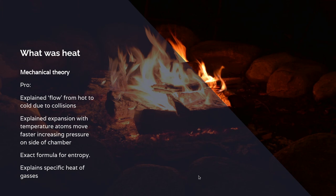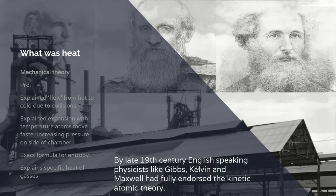For the mechanical theory, you had the fact that it could explain the flow of heat in terms of collisions. Collisions caused heat to flow from the hot body to the cold body. It explained friction, it explained the expansion of a gas with temperature, because the atoms move faster, increasing the pressure. Later on, with Maxwell and Boltzmann, you'll get an exact formula for entropy based on it, and you could explain the specific heat of different gases. So this was a much richer theory. By the late 19th century, the English-speaking physicists, or Gibbs in America, Kelvin and Maxwell and Breton, had fully endorsed the kinetic theory of heat. And it was the established theory within the leading industrial capitalist society.